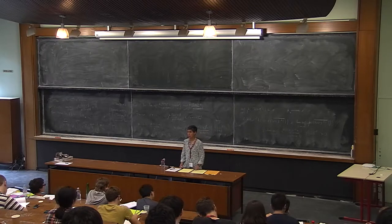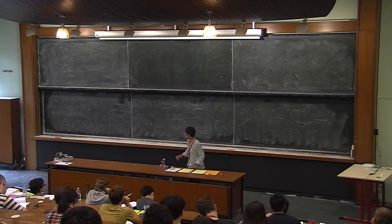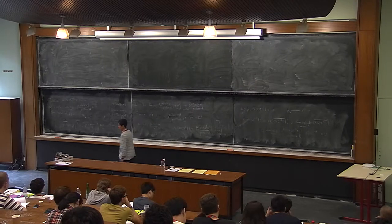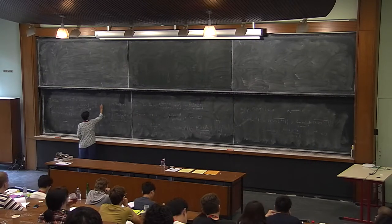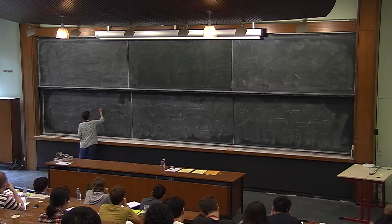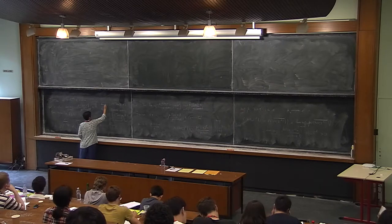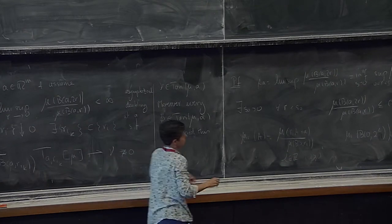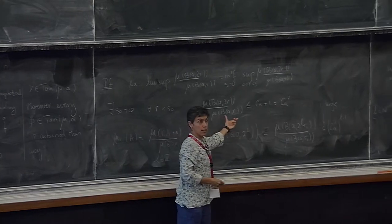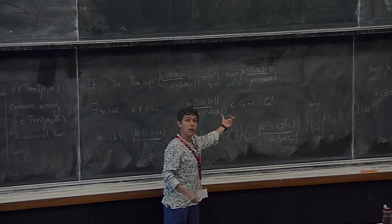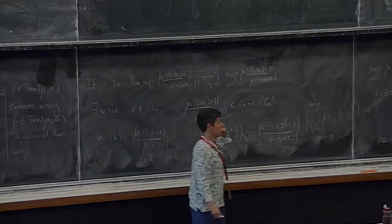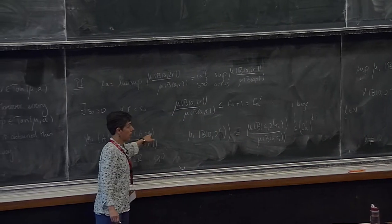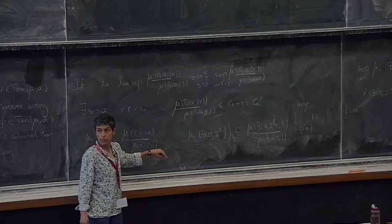I'll let you convince yourself that all tangents are obtained this way. So if we have this star condition—which I am going to call 'asymptotically doubling at a'—and the reason for that name is it tells you that after some point this becomes doubling. If you have that for your measure, then your tangents exist. You know how to make them appear, how to choose the c_sub_i's, and zero is in the support.